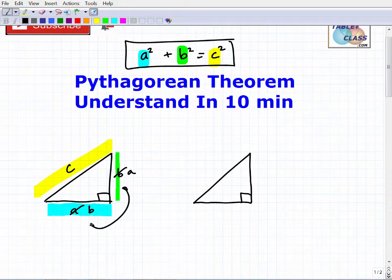These two shorter sides can be A or B, but the longest side of the triangle, the one opposite of that little right angle, is always C. That's C, and that is what we call the hypotenuse.